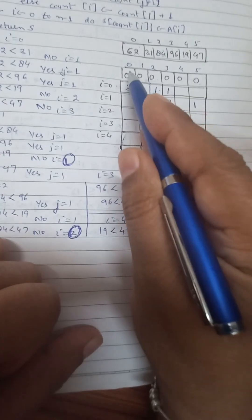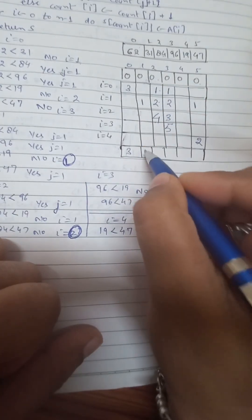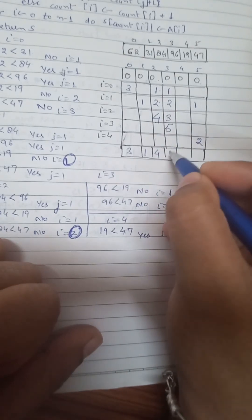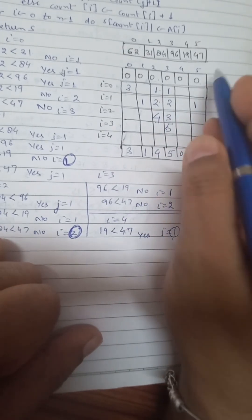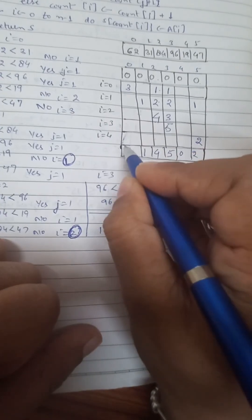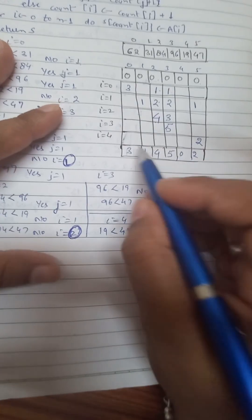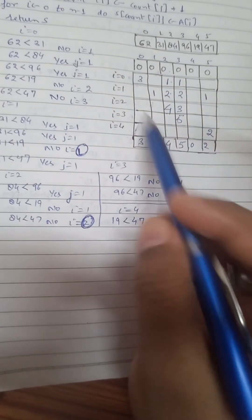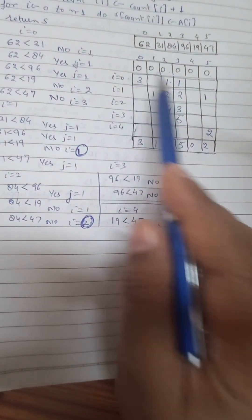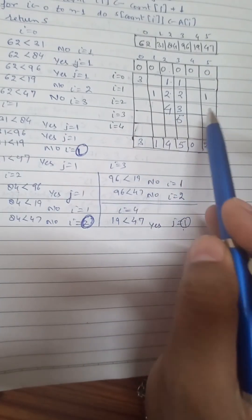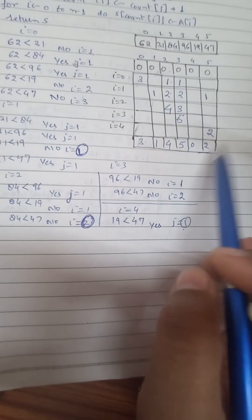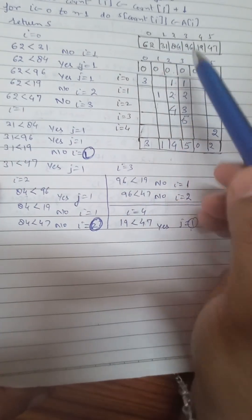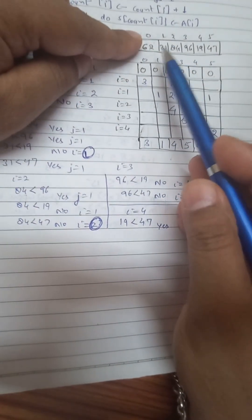At the end, the count array values are: position 0 has 3, position 1 has 1, position 2 has 4, position 3 has 5, position 4 has 0, and position 5 has 2. These final values from the comparison counting sort tell us where each element belongs in the sorted output.